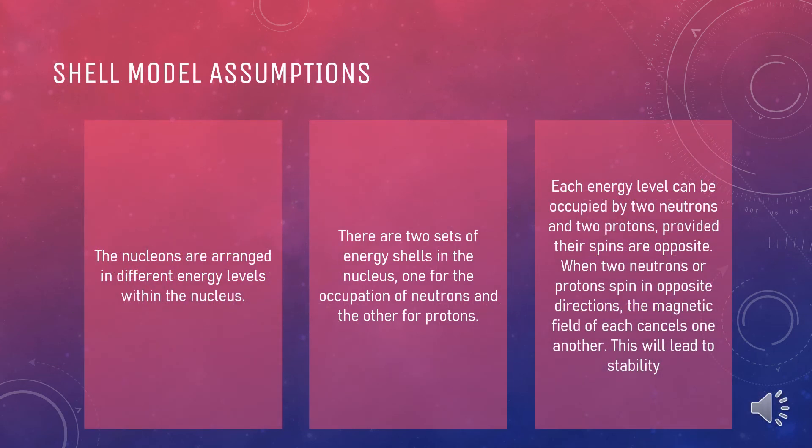So we can conclude three assumptions from the shell model. First, the nucleons are arranged in different energy levels within the nucleus. Secondly, there are two sets of energy shells in the nucleus, one for the occupation of neutrons and the other for protons. Lastly, each energy level can be occupied by two neutrons and two protons provided their spins are opposite. When two neutrons or protons spin in opposite directions, the magnetic field of each will cancel one another. This will lead to stability.